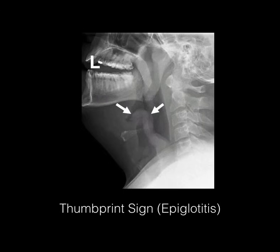This is the thumbprint sign — probably a top five as far as high-yield goes in this lecture. We see this in epiglottitis, where the epiglottis becomes so inflamed that it takes on the appearance of a fat little thumb. The number one pathogen we think of with epiglottitis would be H. influenzae.